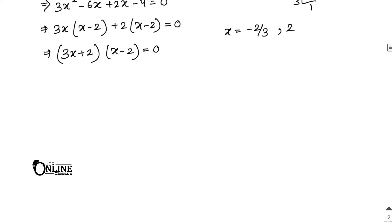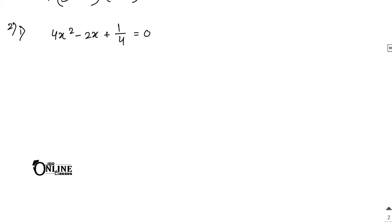Next problem: 4x² - 2x + 1/4 = 0. Multiply each and every term by 4, giving 16x² - 8x + 1 = 0. Now it's a proper quadratic equation. Here 16 × 1 = 16.